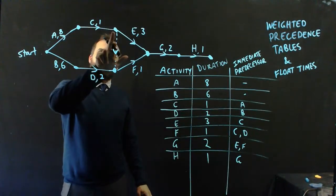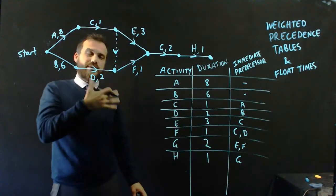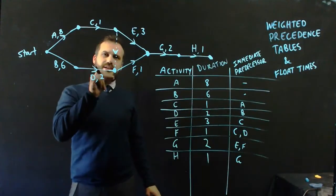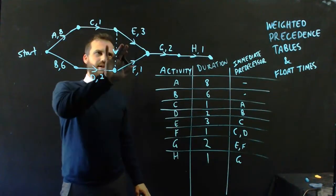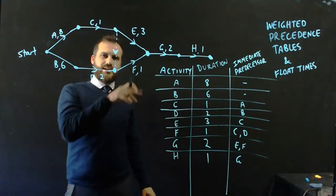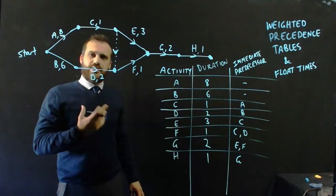So, the moment that C is complete, which is 9 hours into the project, or 9 minutes into the project, I can start doing E and F at the same time. But, look at E and F. E takes 3 minutes to do. F only takes 1 minute to do.